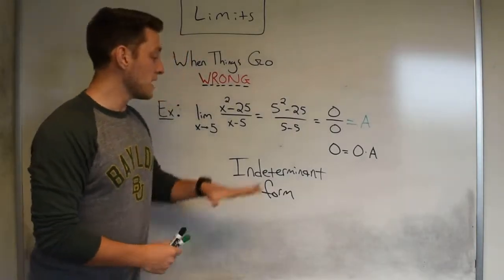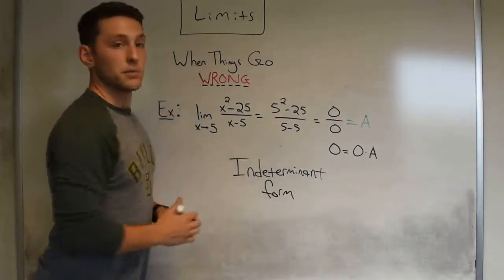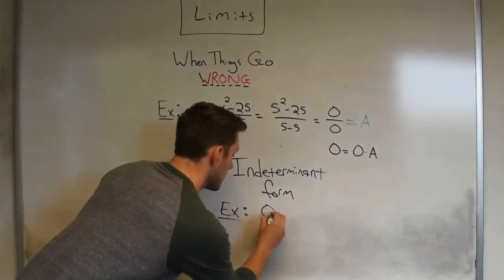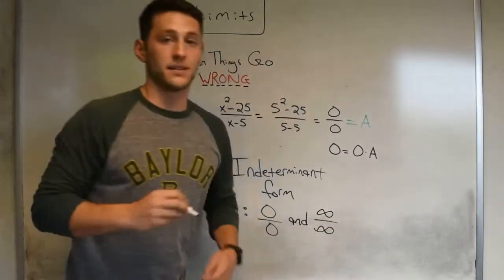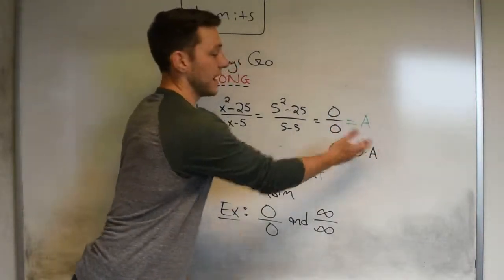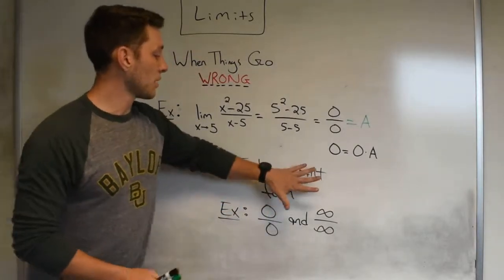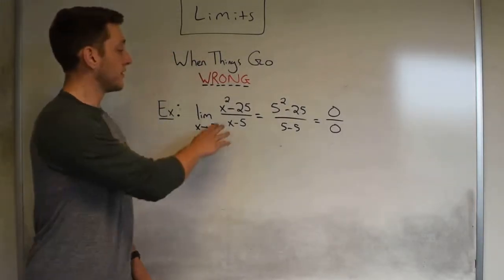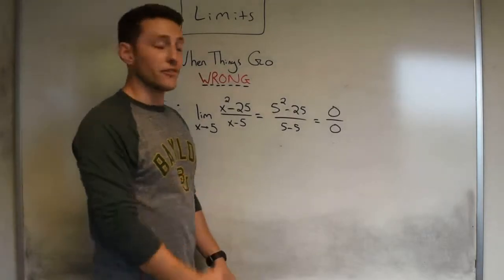An indeterminate form is a compilation of numbers such that we don't really know what the answer is. The indeterminate forms we're going to be running into are potentially two: zero over zero, and infinity divided by infinity. You can think about the infinity case being indeterminate if you imagine infinity equals infinity times a number — anything multiplied by infinity should still be infinity.